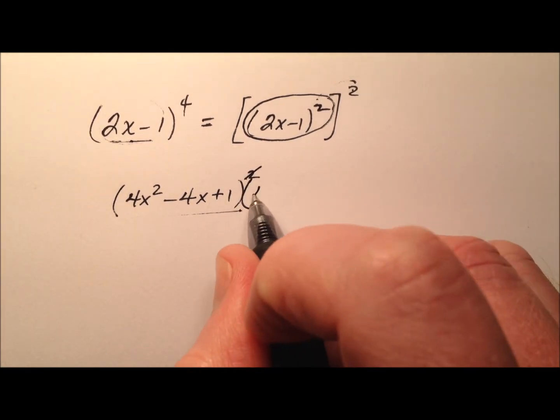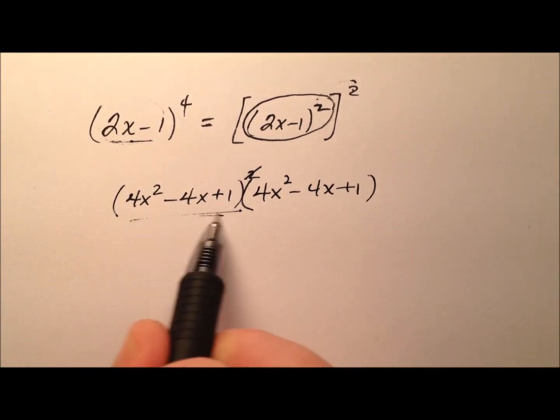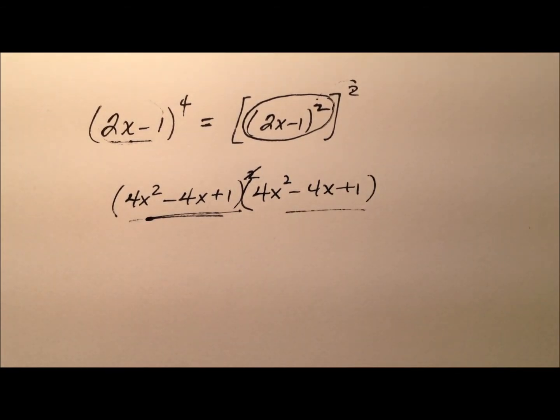So I'll put them side by side, 4x squared minus 4x plus 1, because this is the one square and this is the other square, so when I multiply those, I'll have it to the power of 4. So let's do our series of distributions here.